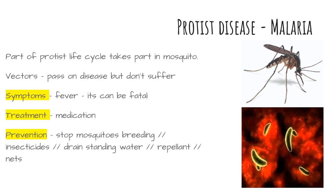Mosquitoes can breed in standing water, so they can be prevented from breeding by removing these water sources. For example, people who live in areas with a risk of malaria should make sure that they empty or get rid of any containers on their land that fill with rainwater.